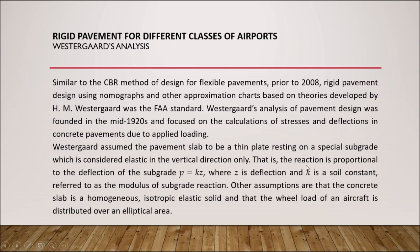That is, the reaction is proportional to the deflection of the subgrade, where p is proportional to z, and the constant of proportionality is k. Here z is the deflection and k is a soil constant referred to as the modulus of subgrade reaction. Other approximations are that the concrete slab is a homogeneous isotropic elastic solid, and that the wheel load of an aircraft is distributed over an elliptical area.